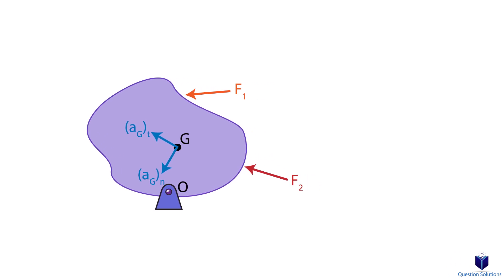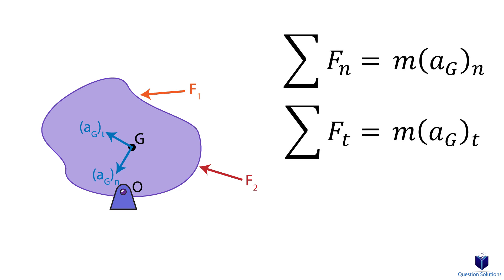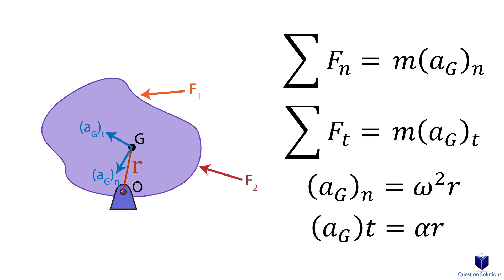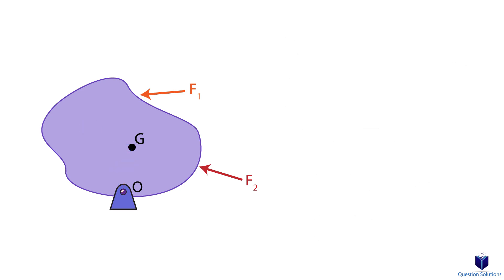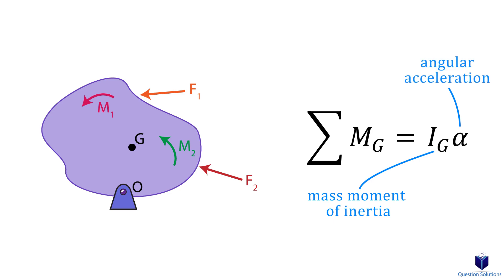We can use the normal and tangential axes and write our equations of motion accordingly. Normal acceleration equals angular velocity squared times the distance from point O to the center of mass. Tangential acceleration equals angular acceleration times that same distance. We can also find the moment about the center of mass: the sum of moments about the center of mass equals the mass moment of inertia at the center times the angular acceleration.